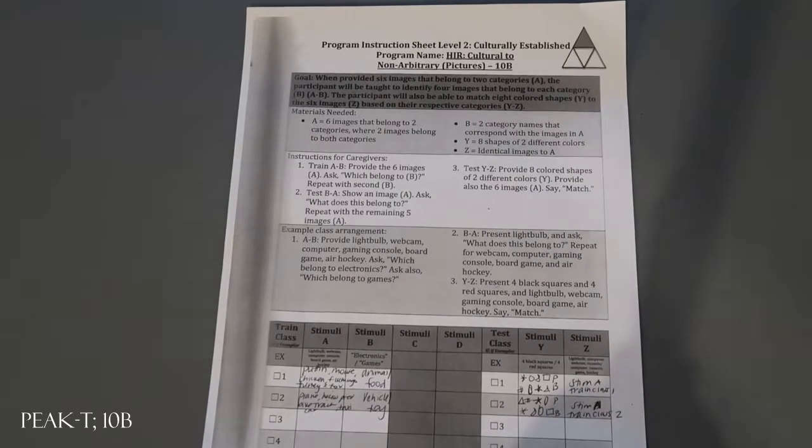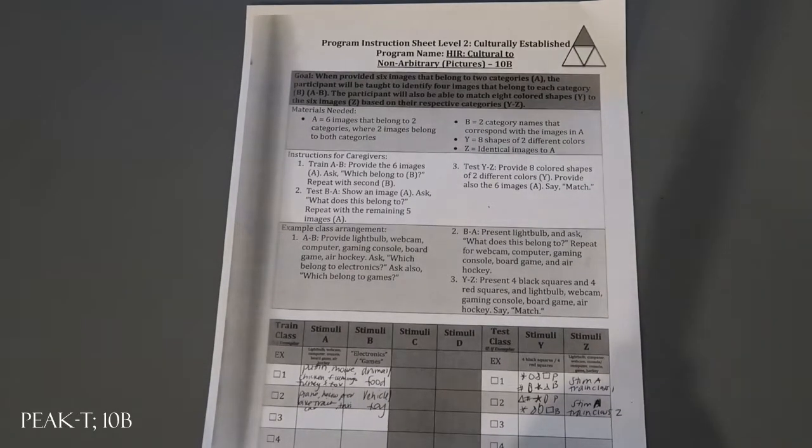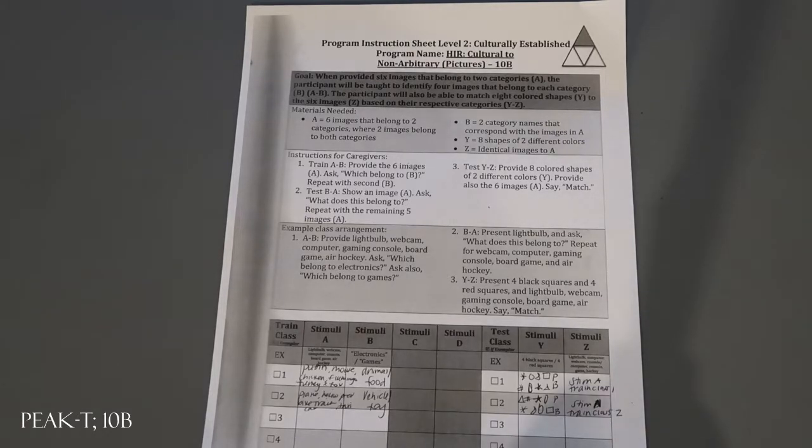Alright, I'm going to do a quick material sample for PEAK Transformation Hierarchy Cultural to Non-Arbitrary Pictures 10B. For this program it's pretty simple, you're just going to need four materials. For stimuli A, six images that belong to two categories, with two images belonging to both categories.